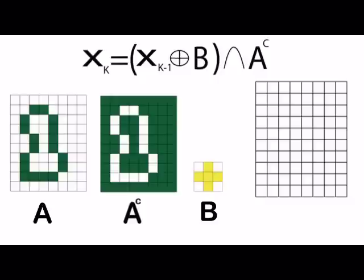Chapter 9: Morphological Image Processing - Hole Filling. Let's start filling the holes by solving the equation for each pixel. We have image A, its complement, and structuring element B.